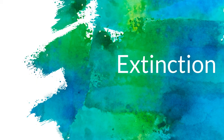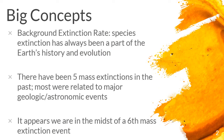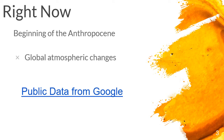This is our second video looking at extinctions in Earth's history as well as today. There's a background extinction rate, and there have been five mass extinctions in the past — we covered those in video one. You should definitely watch it because the causes of those mass extinctions are highly relevant to what's happening in today's world. That brings us to our last big concept: it appears we're in the midst of a sixth mass extinction event. We're at the beginning of what some people are calling the Anthropocene, and at the beginning of our class you listened to a podcast and read a little bit about this controversial term.